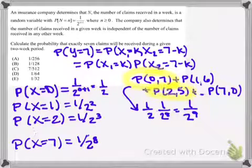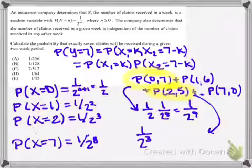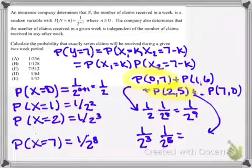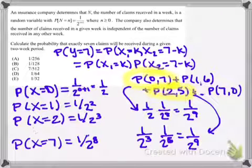But if we select any other term here in our summation, for example, the probability of 2 in the first week and 5 in the second, well, that's going to actually turn out to be 1 over 2 to the 3rd multiplied by 1 over 2 to the 6th, which is going to be 1 over 2 to the 9th. Do we notice anything here? Well, those two are exactly the same. And using our knowledge of exponents, we can understand that all of those terms are going to be exactly the same.